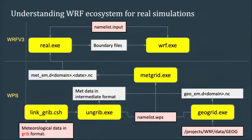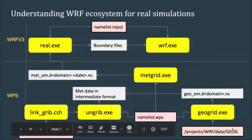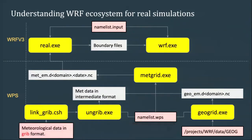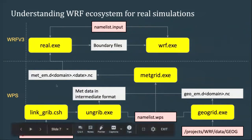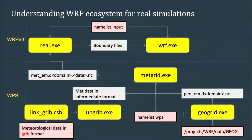So that's the full picture: you start from your geographical data and meteorological data, follow all the steps, and end up with the WRF simulation. If you follow the workflow, there are six yellow boxes — six executables, although one is a shell file. It's quite a lot of different steps to go through.